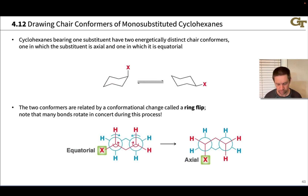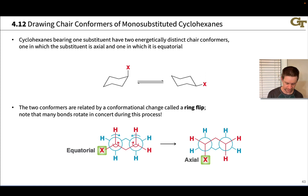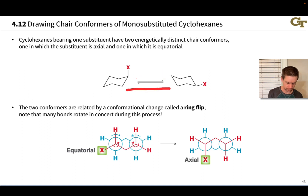Let's start with monosubstituted cyclohexanes. When we have a substituent attached to the cyclohexane ring, that substituent is either in an axial or equatorial position. The chair flip converts an axial substituent into an equatorial one in the forward direction, or converts an equatorial substituent into an axial one in the reverse direction.